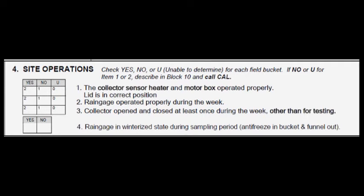Once this is done, record any additional information needed to complete Block 4, Site Operations, on the field form. In this block, you'll need to check either the Yes, No, or Unsure column for each of the first three items. Item 1 asks you to verify that the collector's sensor and motor box operated properly and that the lid is in the correct position — this should have been determined when you first activated the collector. Item 2 asks you to verify that the rain gauge operated properly during the week, determined by referring to your Belford or electronic rain gauge chart. Item 3 asks you to verify if the collector opened and closed at least once during the sampling period, other than for testing purposes. Finally, don't forget to indicate in Item 4 whether or not your rain gauge was in winter operation mode during the sampling period.